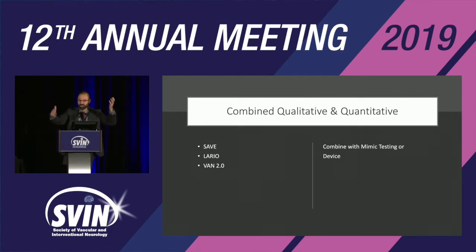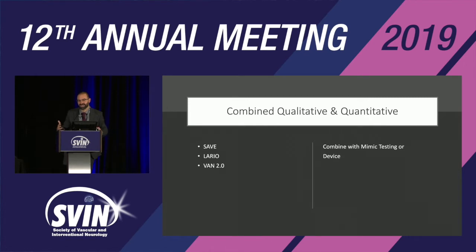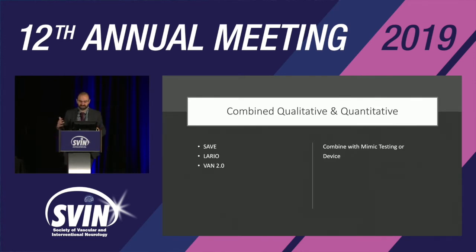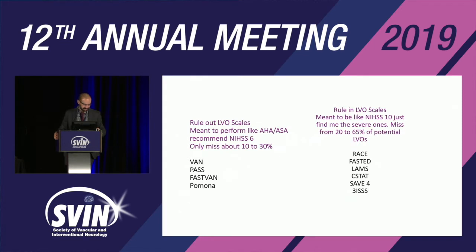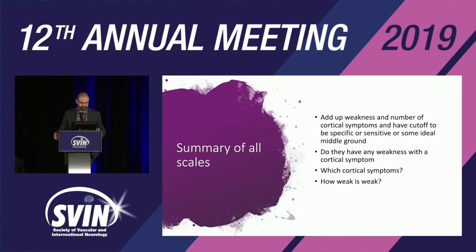Some scales combine both approaches. SAVE requires arm weakness plus gaze plus aphasia — you must have all of them. But really, everything is a combination testing the same two things: weakness and cortical symptoms. That's the entire talk in summary — every scale just adds up weakness and cortical symptoms with some cutoff or sensitivity/specificity tradeoff.